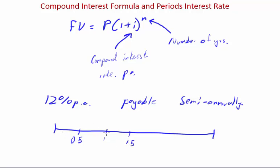Every period will be half a year, not one year, and because of that this formula doesn't really help you because n is the number of years and i is the compound interest rate per annum. It doesn't really match up with this question here.